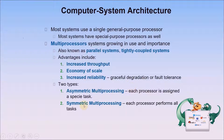Redundant processing provides a system of checks and balances, enabling graceful degradation and fault tolerance. There are two types: asymmetric multi-processing, wherein each processor is assigned a specific task, and symmetric multi-processing, where each processor performs all tasks.